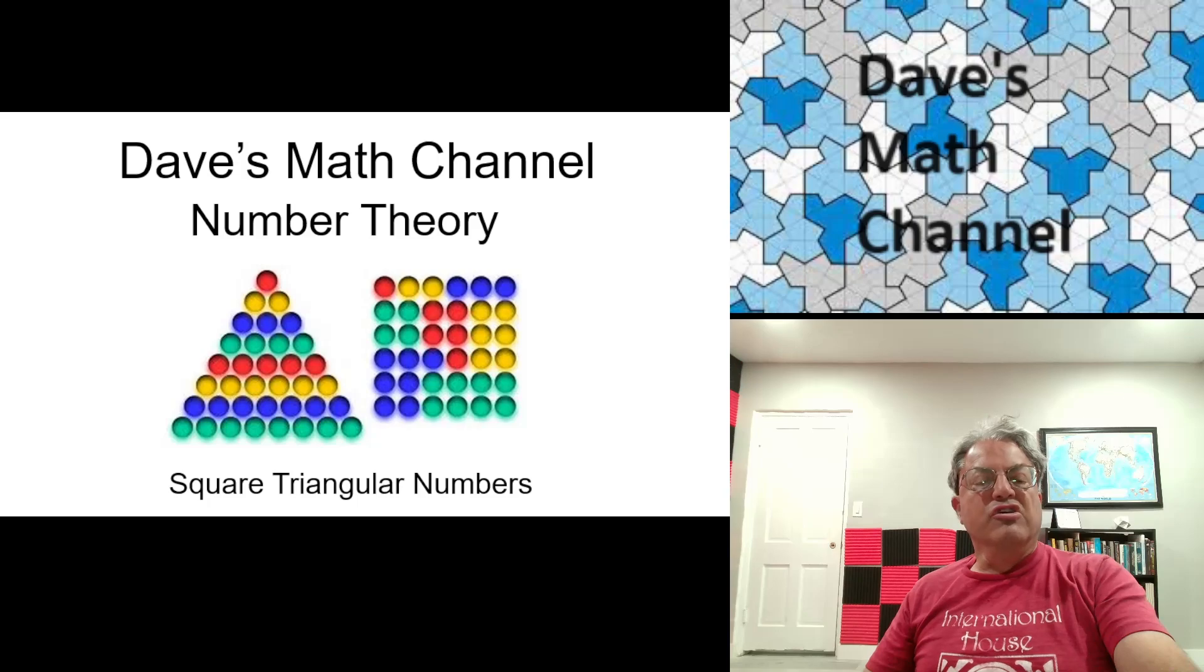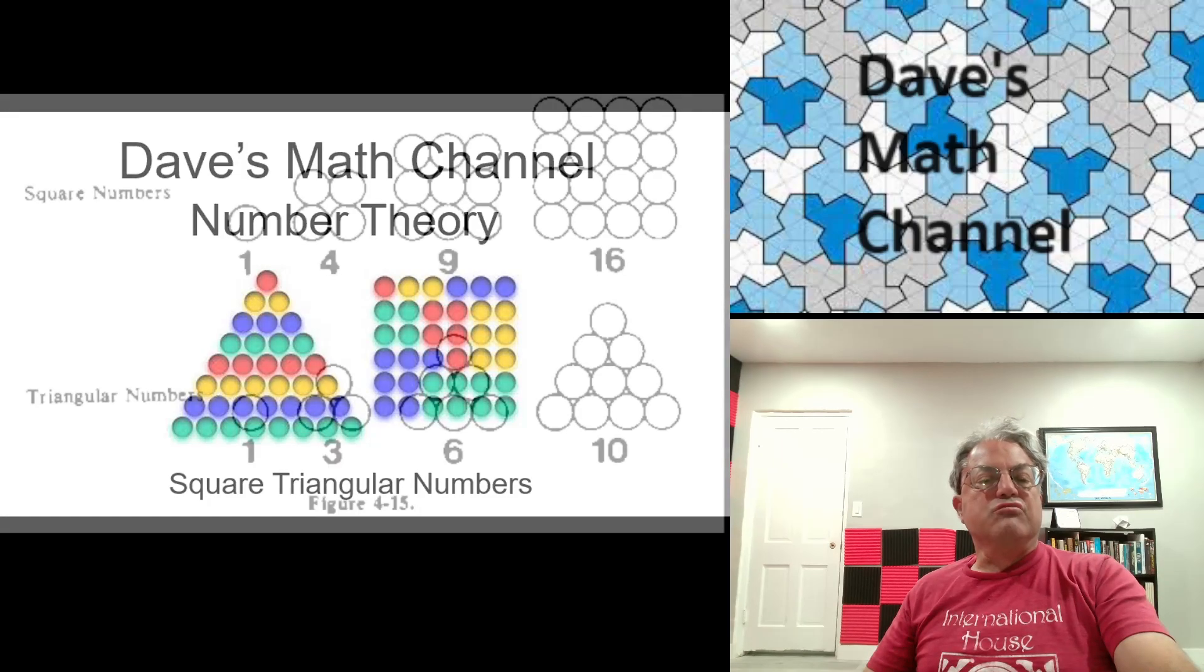A triangular array is shown. The example shown here is 36, which is equal to 6 squared or the 8th triangular number. I'll get into that some more.